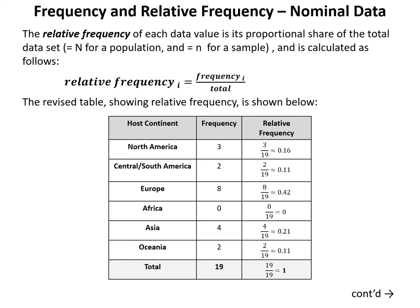The revised table shows a third column for relative frequency. The total of all frequencies is 19, so to find the relative frequency for each host continent we divide the frequency by 19. For example, North America with a frequency of 3 has a relative frequency of 3/19, and Central/South America with a frequency of 2 has a relative frequency of 2/19.